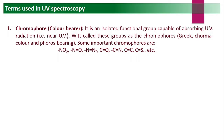Examples of chromophores include nitro groups, nitroso groups, azo groups, carbonyl groups, cyano groups, imine groups, carbon-carbon double bonds, and carbon-carbon triple bonds. These unsaturated functional groups are independently capable of absorbing UV radiations and giving color to the compound in UV-visible spectroscopy.